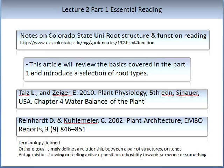In order to complete this lecture, you will need to conduct the following three readings. The first is notes written by Colorado State University on root structure and function, which will review the basics covered in this lecture and introduce a selection of root types. The second is a generic reading on plant physiology by Taiz and Zeiger on water balance of the plant — please read the components of chapter four relating to root structure and function. Finally, a paper written in 2002 on plant architecture, which will introduce terminologies and aspects of plant architecture.